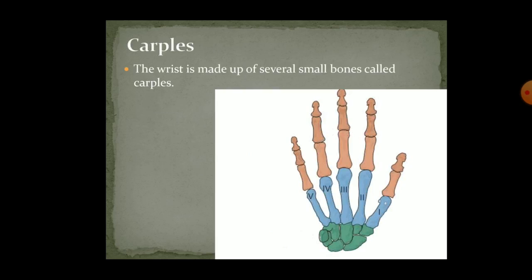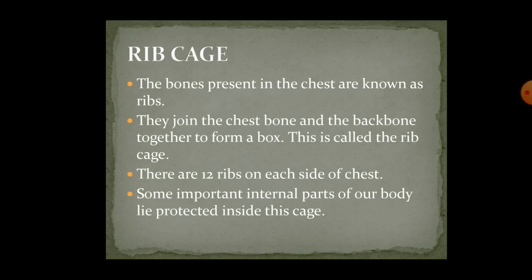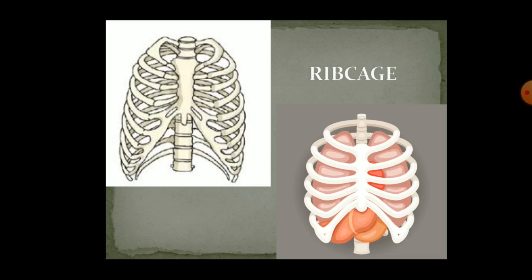There are small bones present on the back of our hand which you can feel. There are also small bones present in our fingers with the help of which we are able to bend our fingers. These small bones are known as carpals. Then the ribcage — the bones you can touch near your chest are known as ribs. These ribs join and form a box-like structure, joining with the chest bone and the backbone. This box is known as the ribcage, and there are 12 ribs on each side of the chest. Important parts like the lungs and heart are protected inside this ribcage.